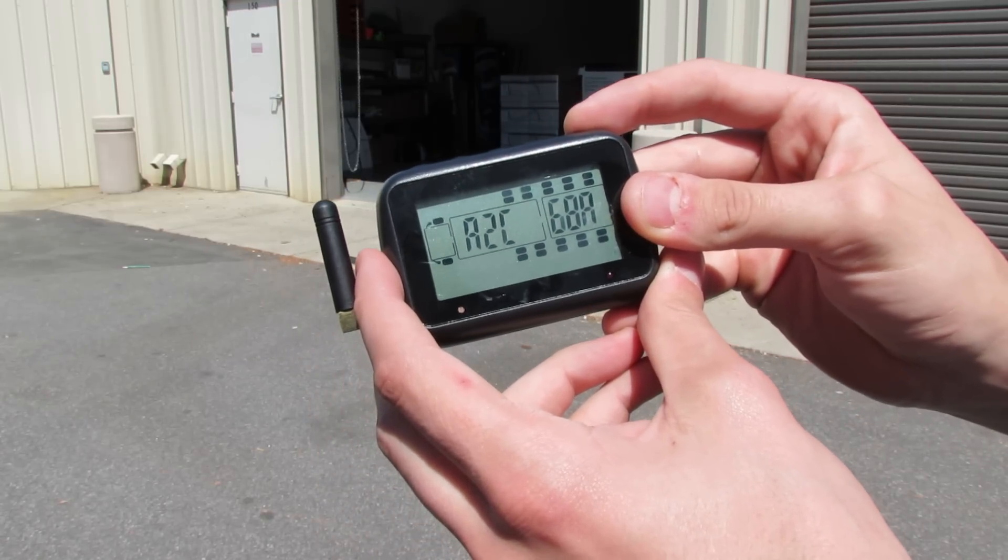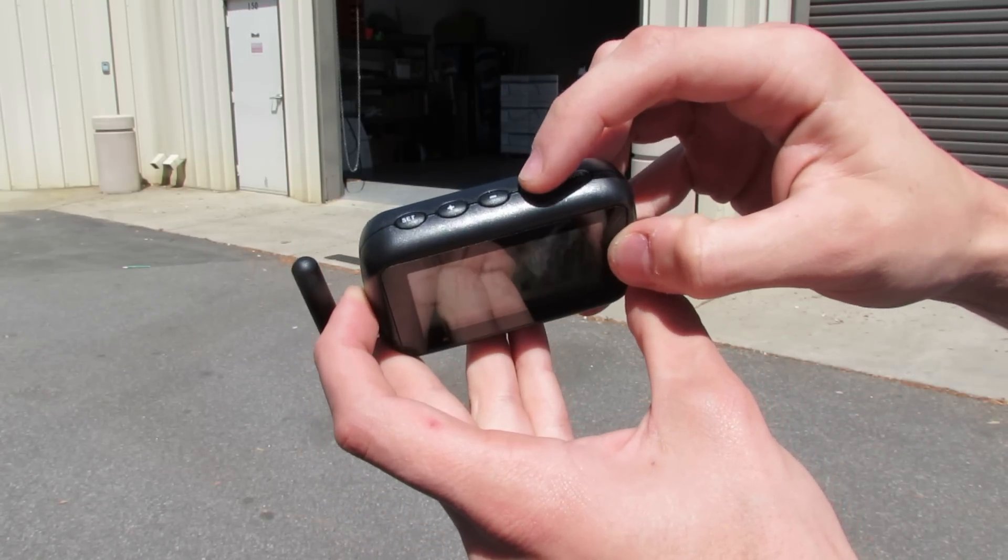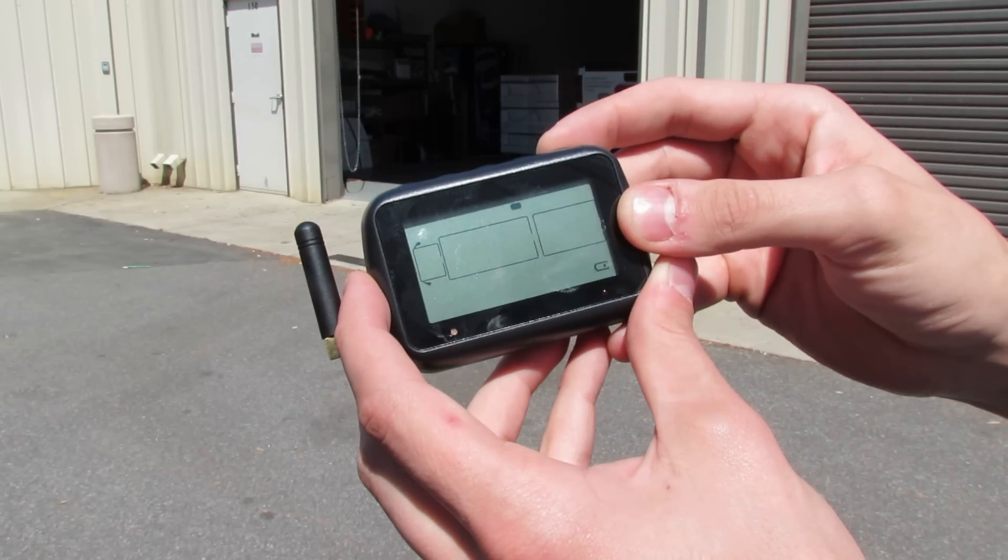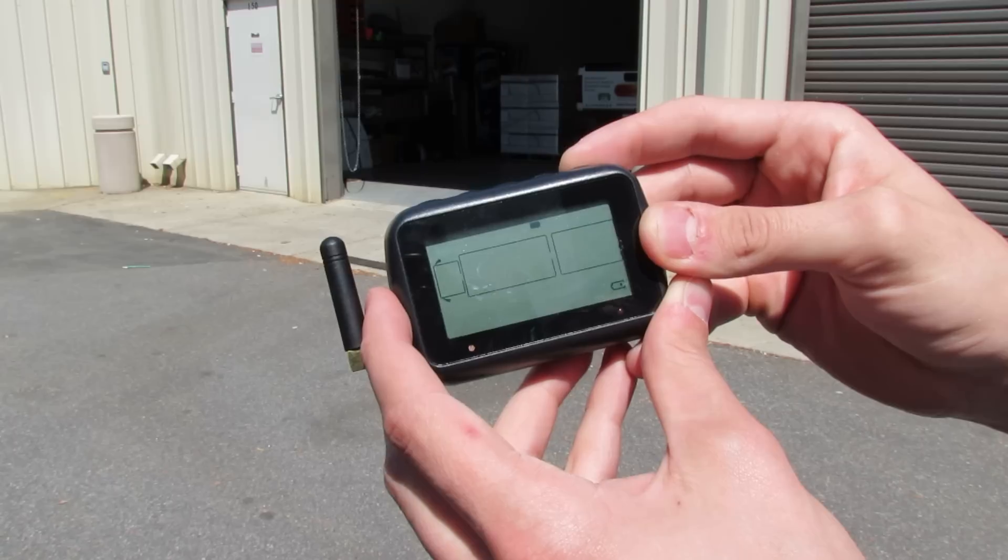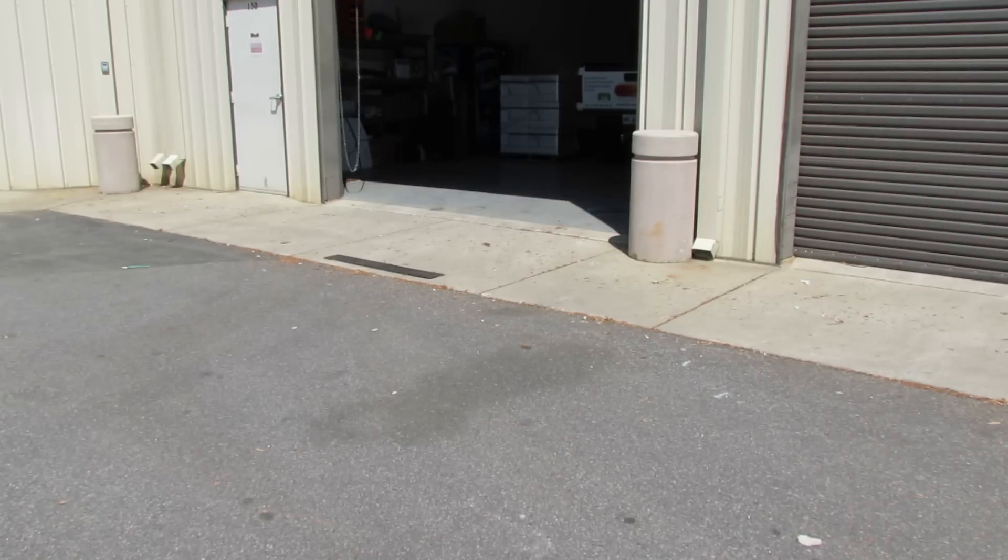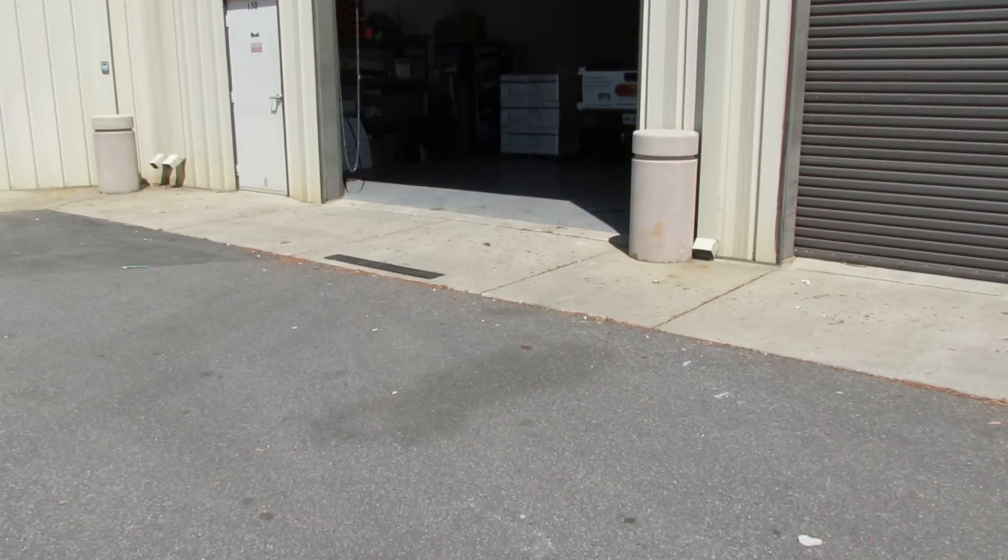Once you are done with your sensors, press the mode button and it saves your tire position and your codes. Next, we will be putting the tire pressure sensors on the tire itself.